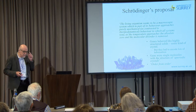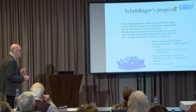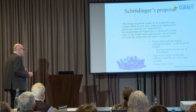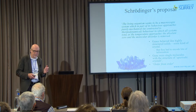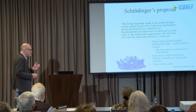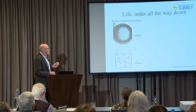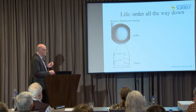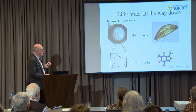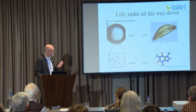Schrödinger was particularly interested in chromosomes. He claimed a living organism seems to be a macroscopic system which in part of its behavior approaches purely mechanical behavior - to which all systems tend as the temperature approaches absolute zero and molecular disorder is removed - in other words, quantum mechanical behavior. He claimed genes were some kind of aperiodic crystal in which individual crystal structures play a coding role. Most structures in the inanimate world are order from disorder, but life uniquely has order all the way down to the molecular level.